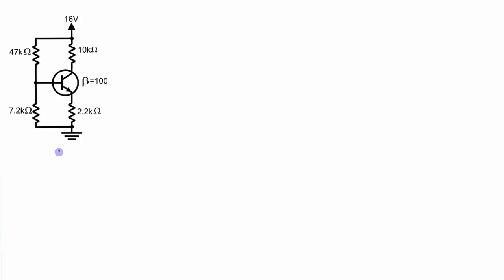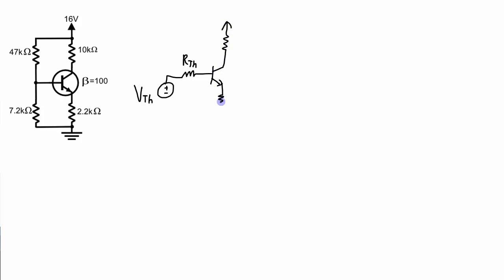The first step in the more precise method is to figure out what the Thevenin equivalent is for this input, or this circuit applied to the base. Redrawing that circuit as its Thevenin equivalent gives me a source, which I am going to call VTH, applied through a resistor which I am going to call RTH — TH for Thevenin — applied to the base of the transistor. The rest of the circuit at the collector and the emitter is the same.